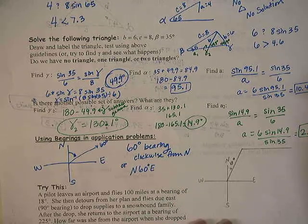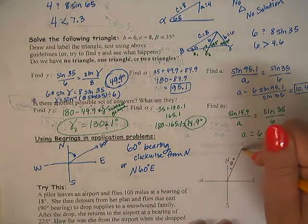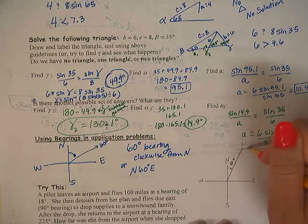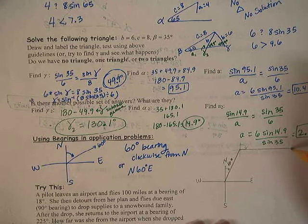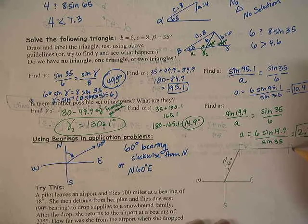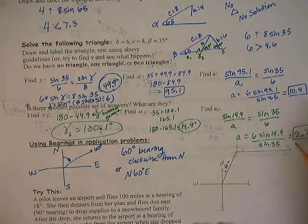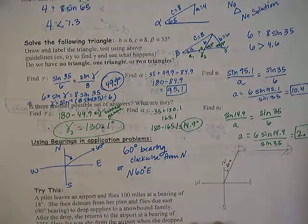After the drop, she returns to the airport at a bearing of 225 degrees. At each place where there's a turn, you can draw a new little set of axes to figure out that bearing. Like here's our 90 degree bearing. And then here, after she drops the supplies to a family that's stuck in the snow, she now is going to do 225. So here's 90, 180, and of course around to the other line would be 270, so 225 would be right there. Something like that effect.